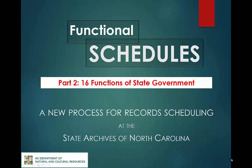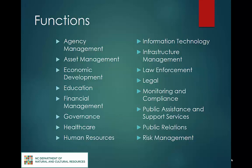The State Archives of North Carolina undertook a project to revamp the records retention and disposition schedules of state agencies. This training module provides an overview of the 16 functions of state government. I will go through each of these functions individually, explaining its scope and listing its subsections, and provide several examples of record types within each subsection.